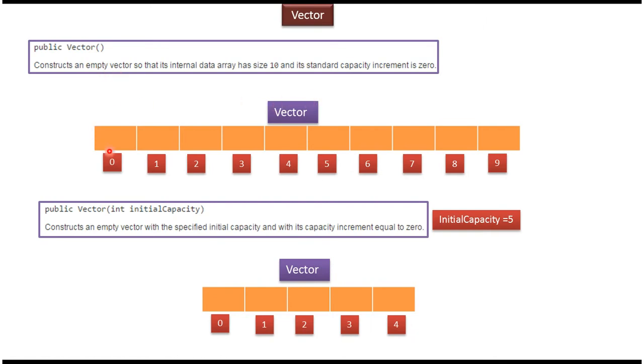And this is the second constructor which accepts initial capacity. Suppose if we specify initial capacity as 5, then it will construct an empty vector with the initial capacity 5, and the vector will be like this.